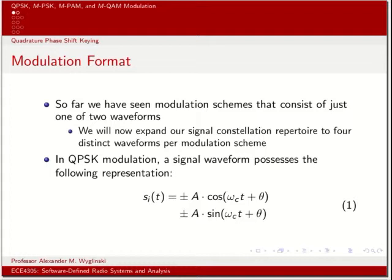QPSK is more interesting because it takes a pair of binary digits or bits and encodes it into one of four possible unique waveforms. Equation one describes the mathematical description of the signaling waveforms used in QPSK — a combination of cosine and sine wave functions with phases, where the amplitude values can be either a positive or negative value of a constant amplitude A.